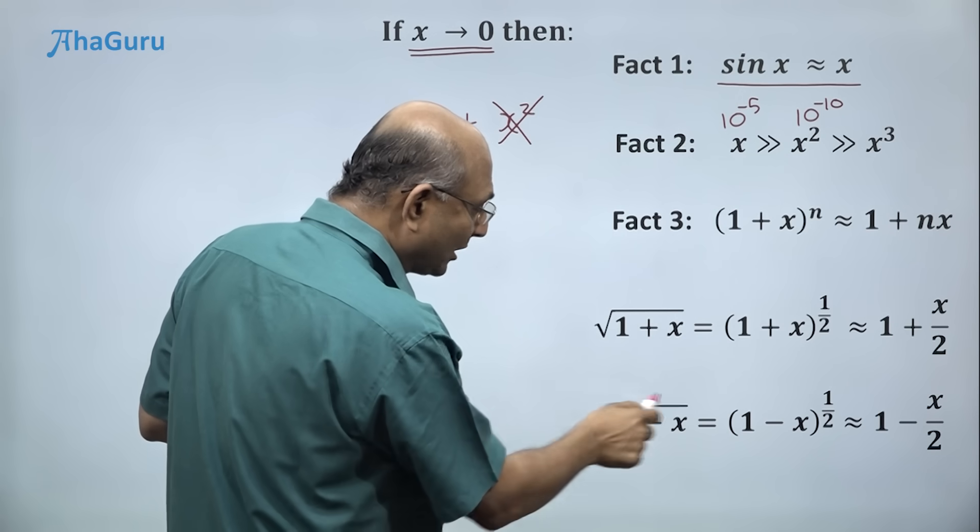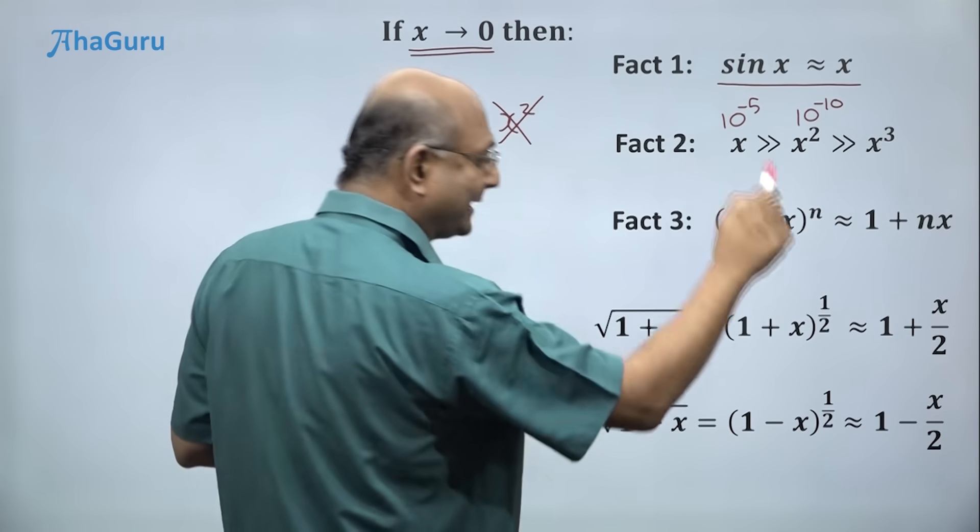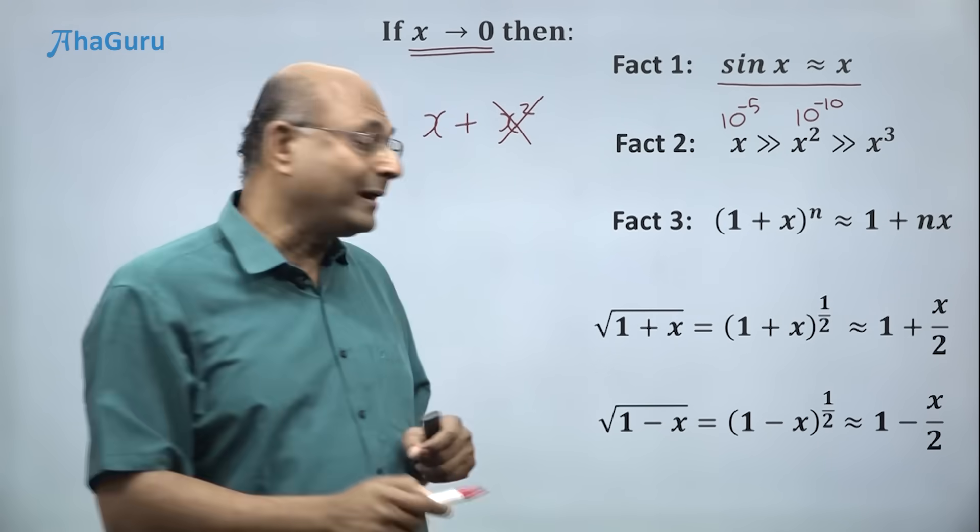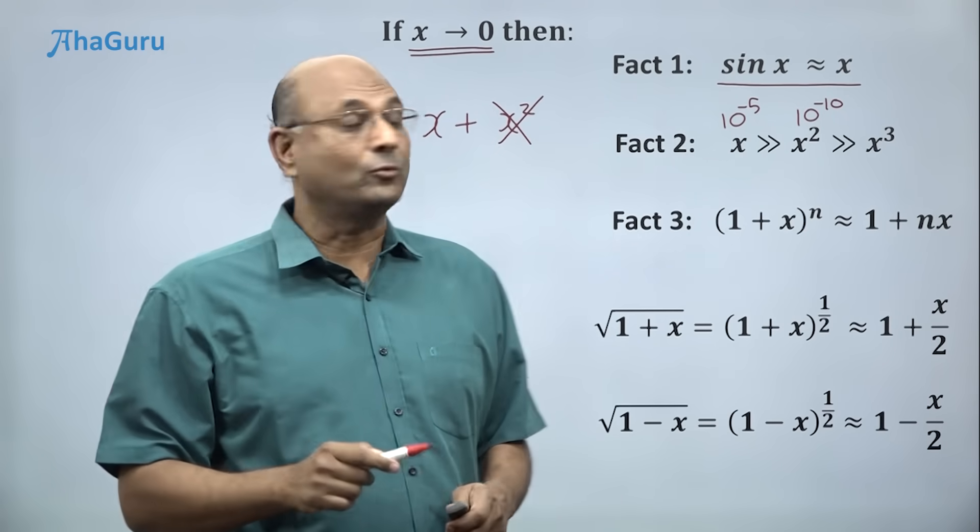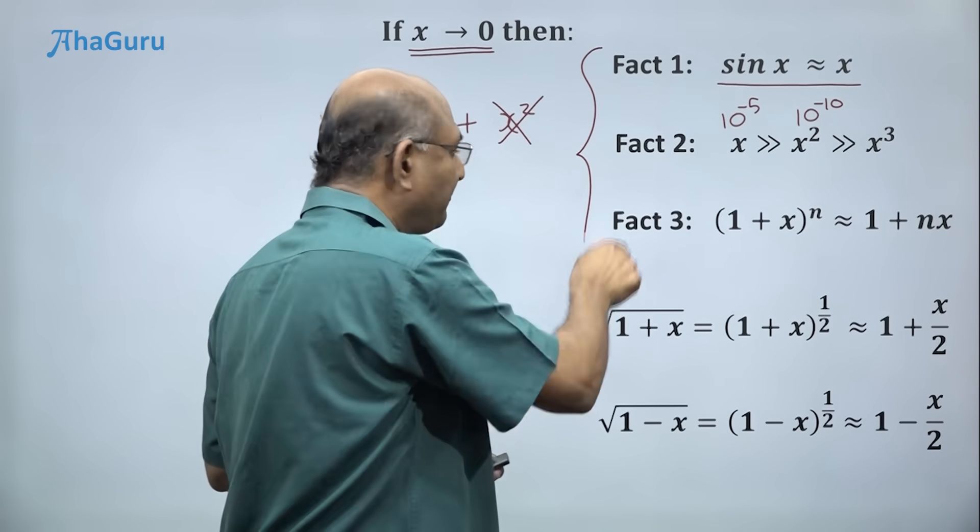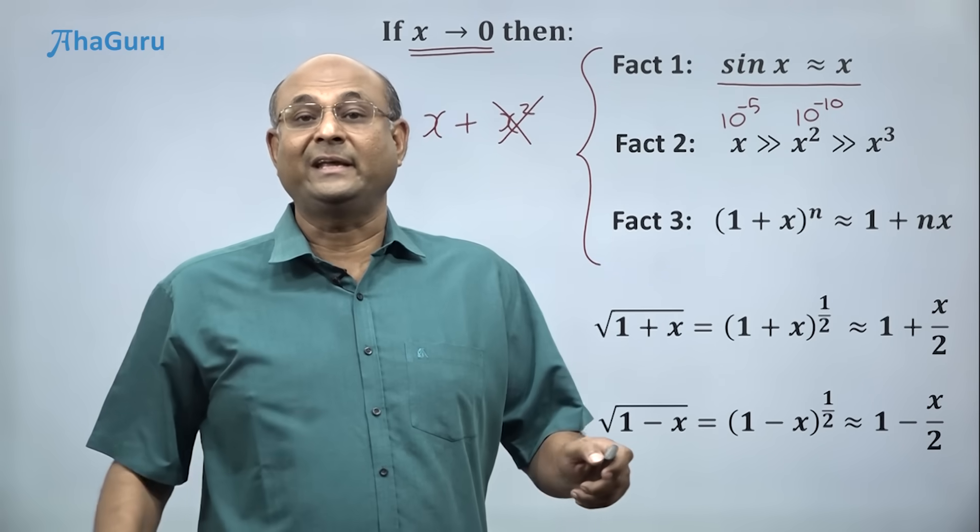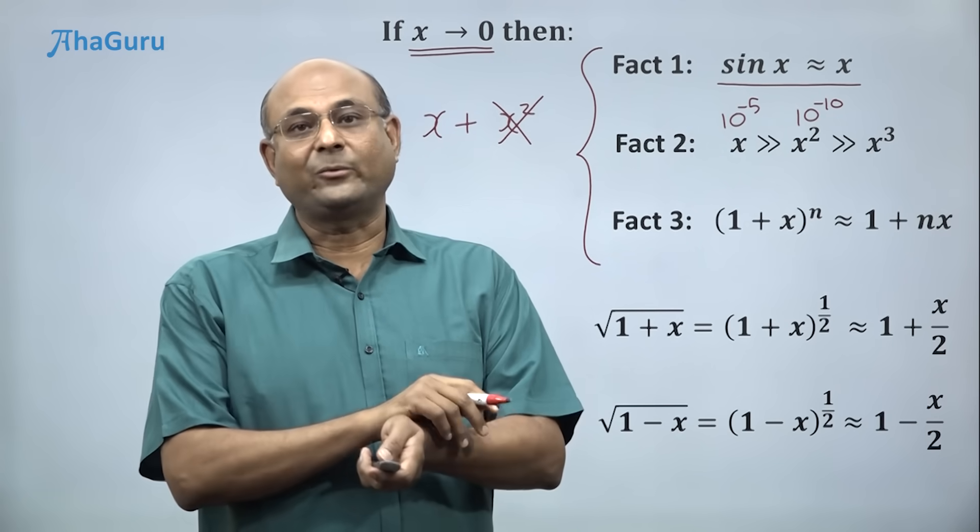Similarly, root of 1 minus x you can write as 1 minus x power half, so 1 minus half times x, which is 1 minus x by 2. So we are going to use these three facts extensively in solving the JEE equation.